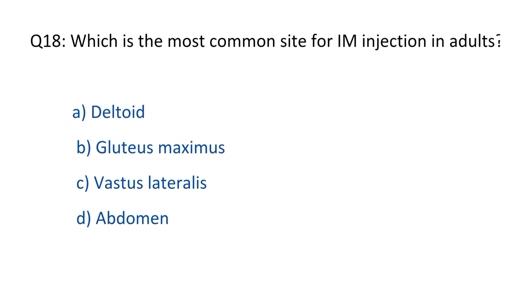Question No. 18. Which is the most common site for IM injection in adults? The right option is option B, gluteus maximus.